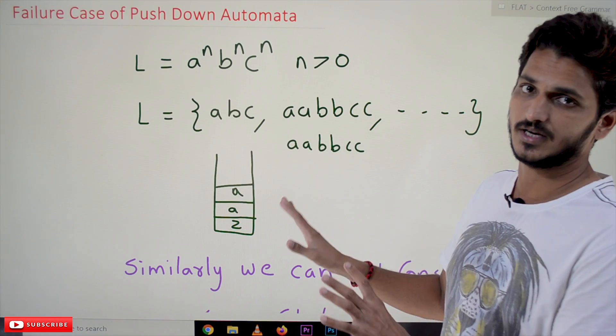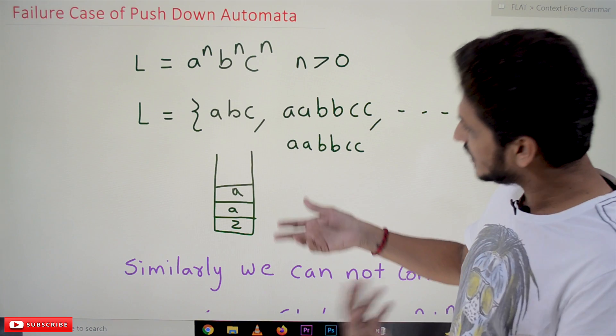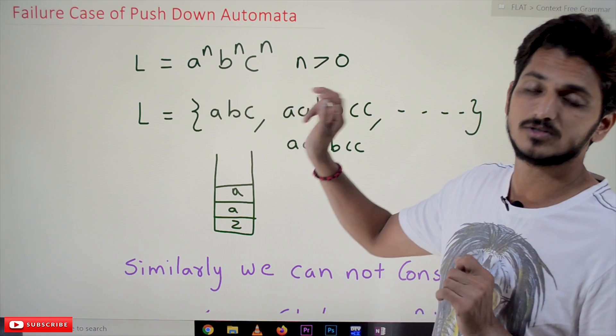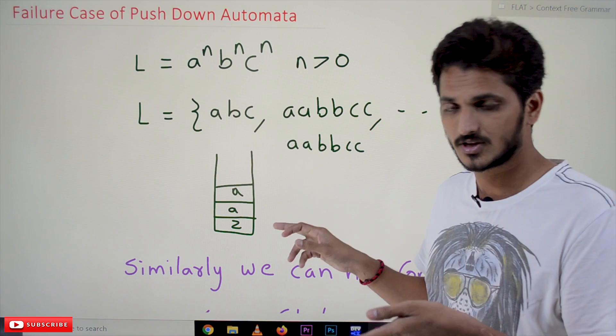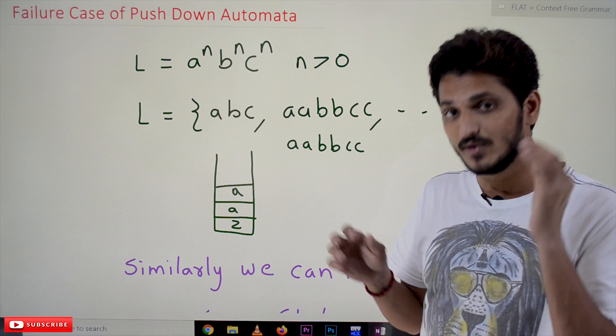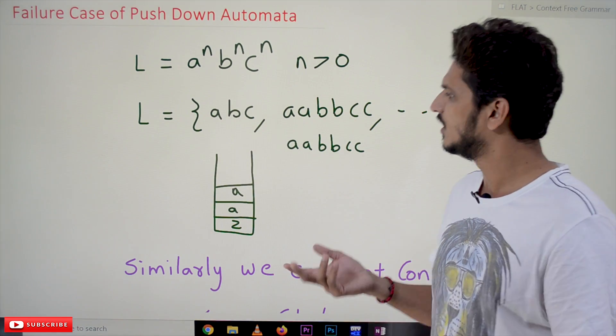We cannot do it using stack memory. Equality check cannot be constructed. That's why this is the failure case. So let's try to understand. We cannot construct context-free grammar also for this language. If you cannot construct pushdown automata, means we cannot construct context-free grammar also.